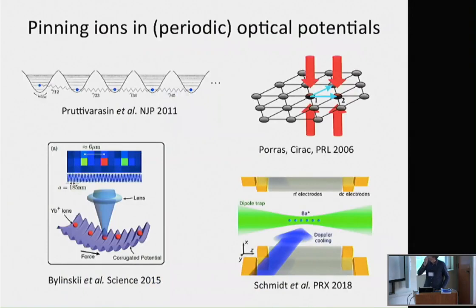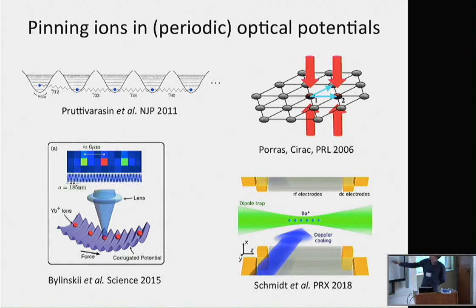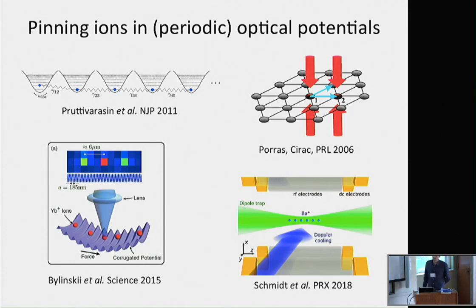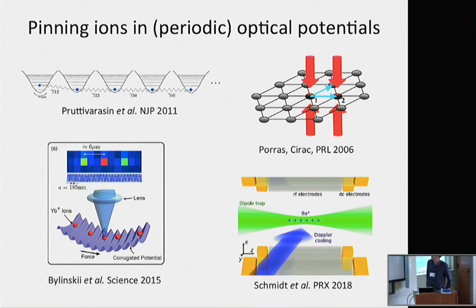The idea and motivation in this work is to combine electric potentials with optical potentials. One motivation was nice work by a group: if you have ions in an optical lattice that also interact with a Coulomb force, you have a nice platform where there is a competition between these forces. This competition has been exploited to study friction at the nanoscale, looking at ions sliding or being pinned in this combined corrugated potential.